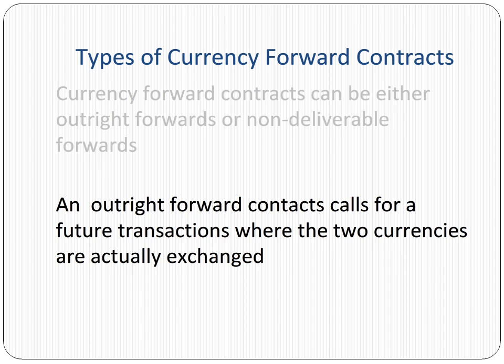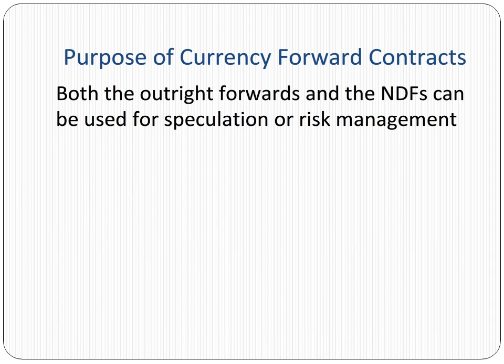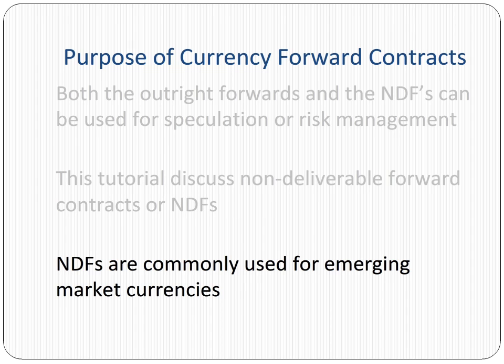An outright forward contract calls for actual deliveries of two currencies at a future date. An NDF is settled in a single currency, such as the US dollar. Both the outright forwards and the NDFs can be used for speculation or risk management. This tutorial discusses NDFs. NDFs are commonly used for emerging market currencies but can be used for any currency.